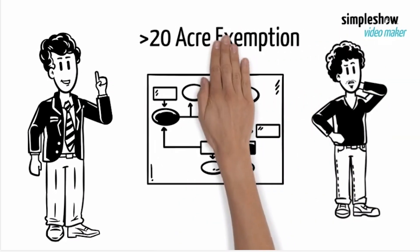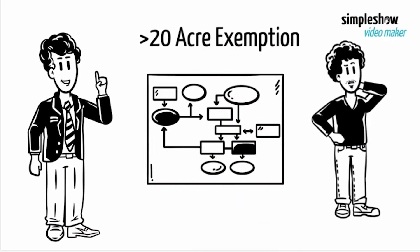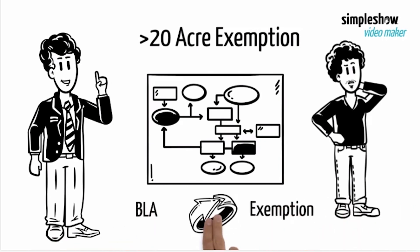But there's an exemption to the subdivision process if the lots you create are greater than 20 acres each. We can use the BLA process, and then the subdivision exemption process over and over until we get to your desired number of lots.